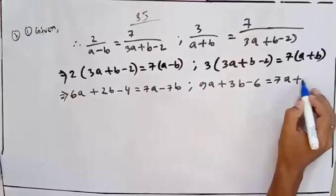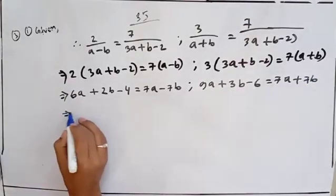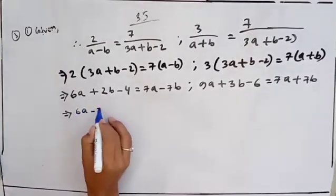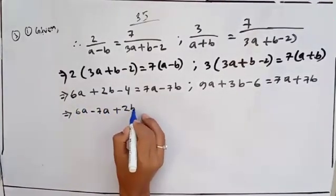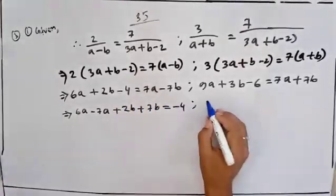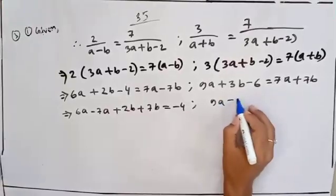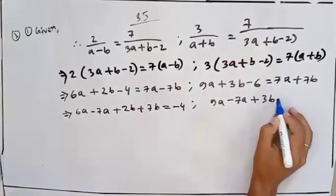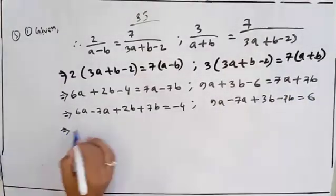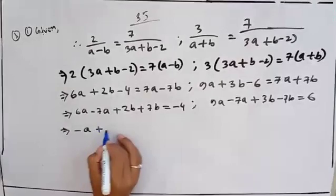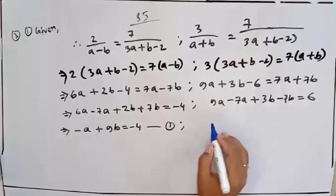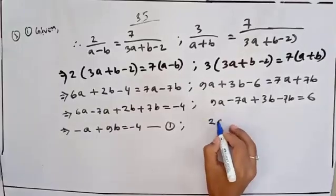So implies that: negative 6a minus 7a plus 2b plus 7b minus 4 equals 0. Simplifying: minus a plus 9b equal to 4, so minus a plus 9b equal to 4.